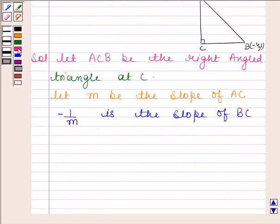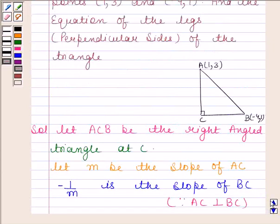This is because AC is perpendicular to BC and we know that product of slopes of two perpendiculars is -1.